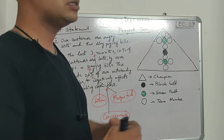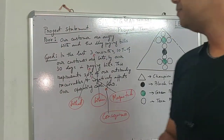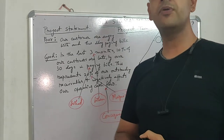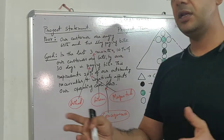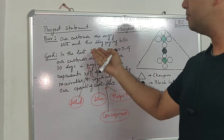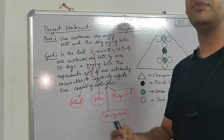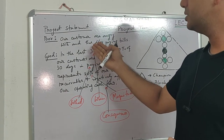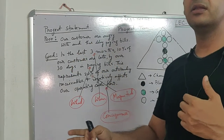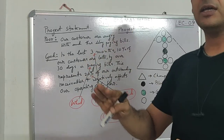After all these activities we need to formulate our project statement. There are different approaches, but not all statements are ideal project statements. For example, a poor statement would be: 'Our customers are angry and thus delaying paying bills.' In that statement there is no data — no dissatisfaction level, no timeline for how many days they are delaying bills, and no impact to the business mentioned.